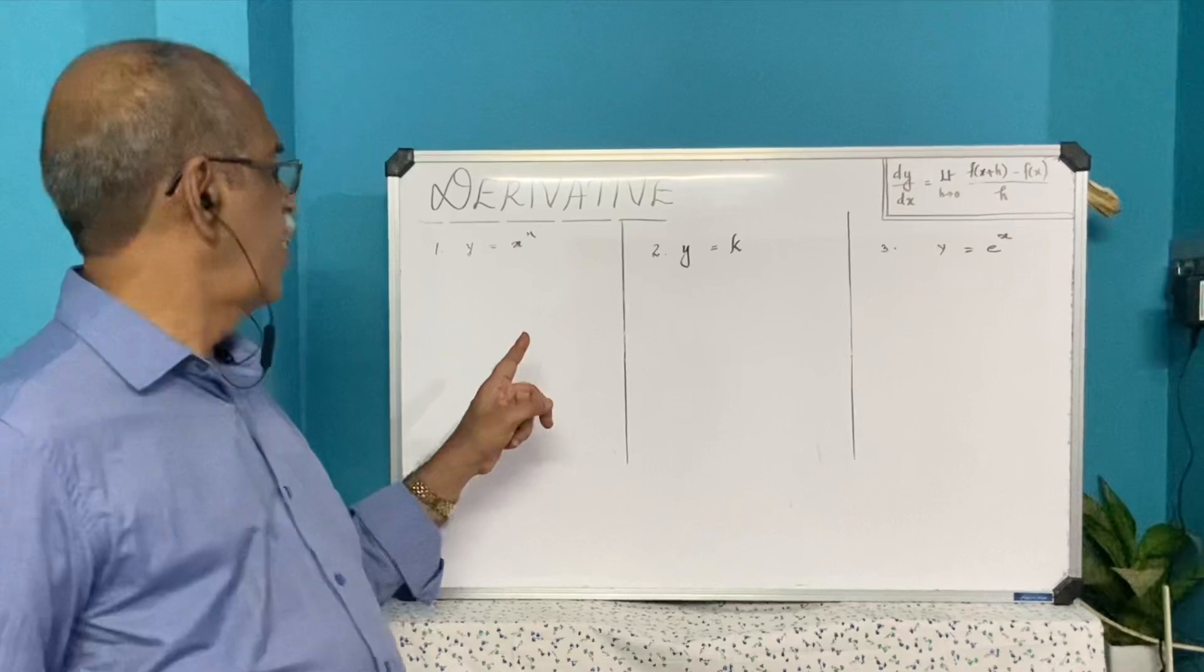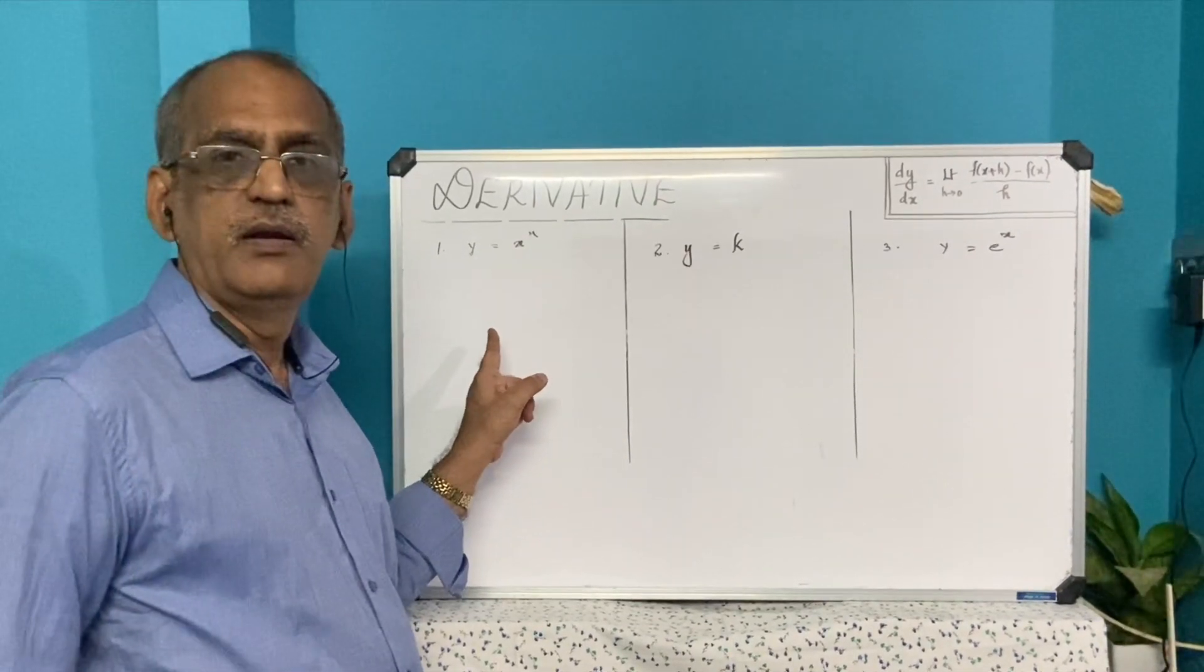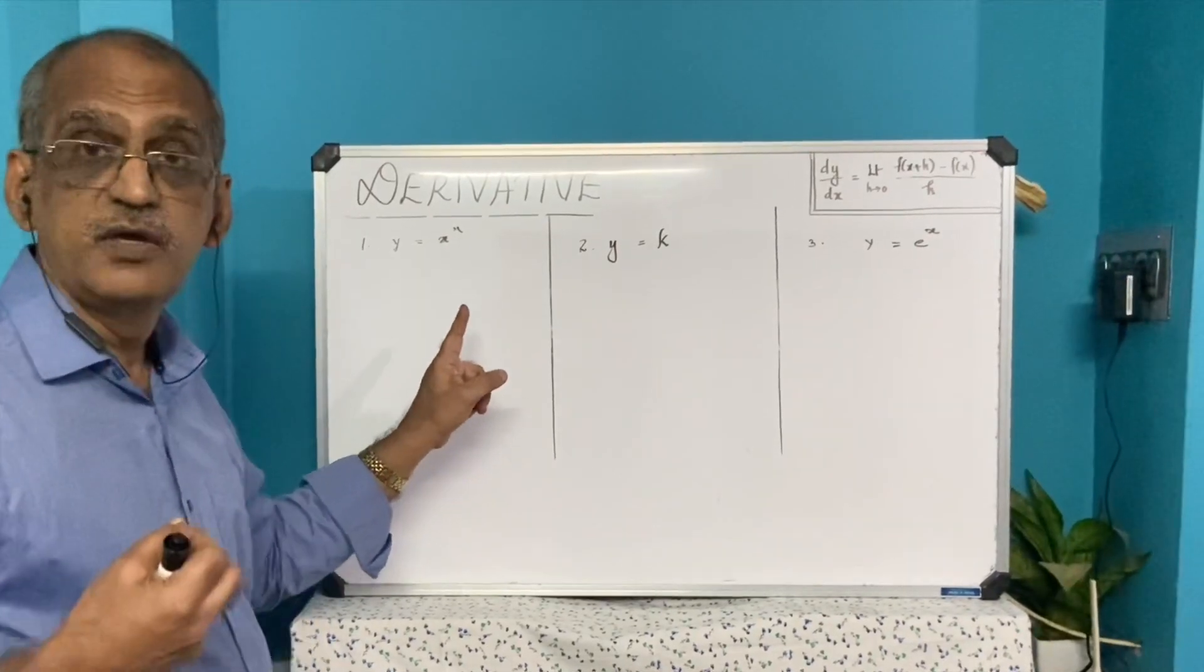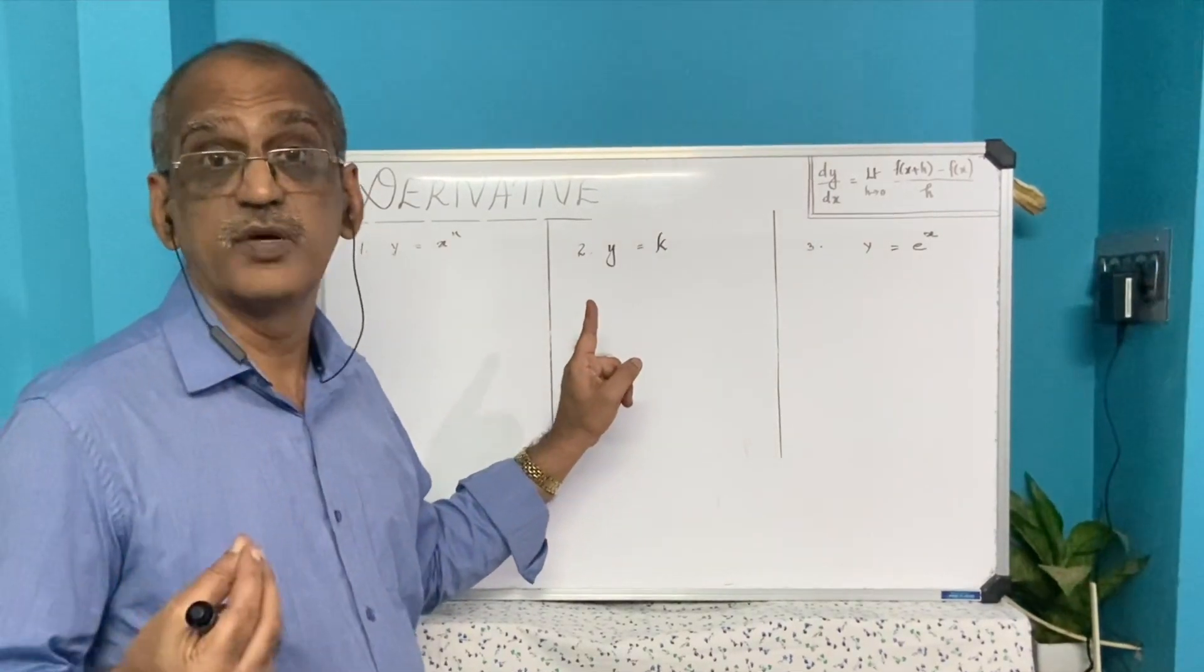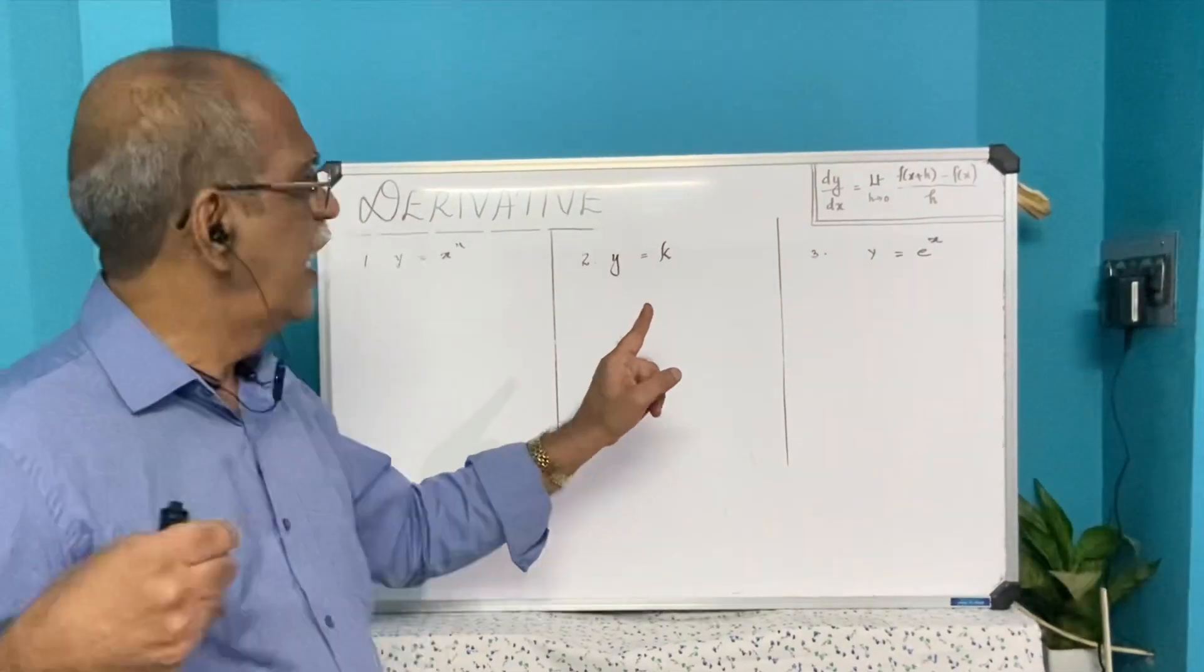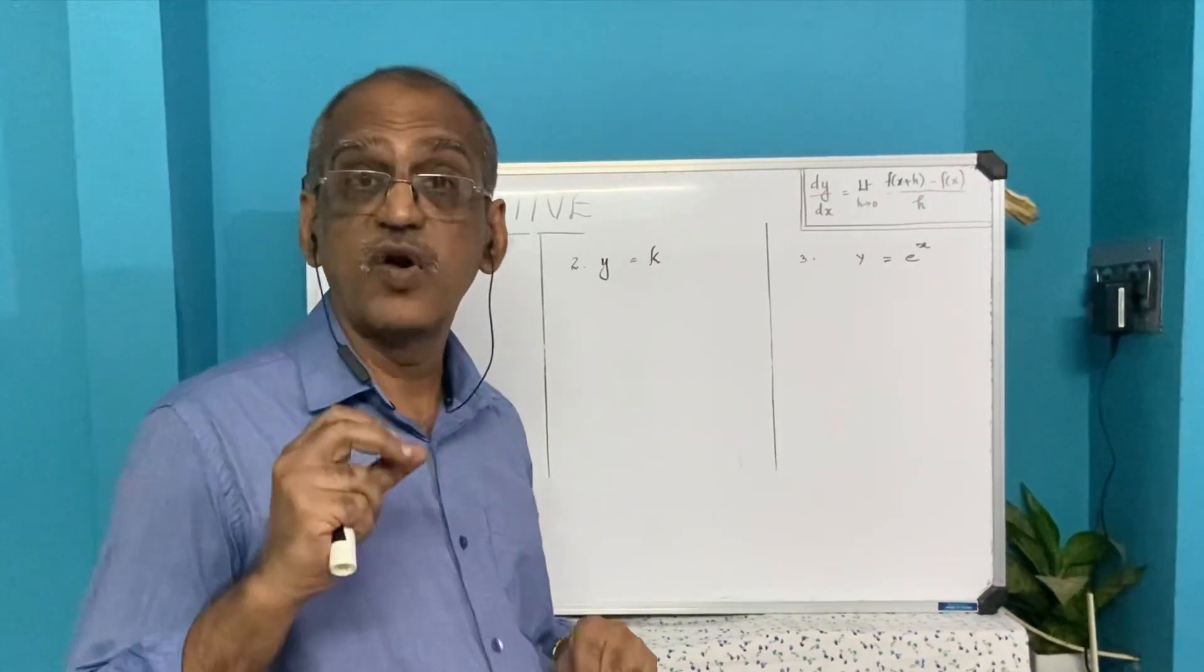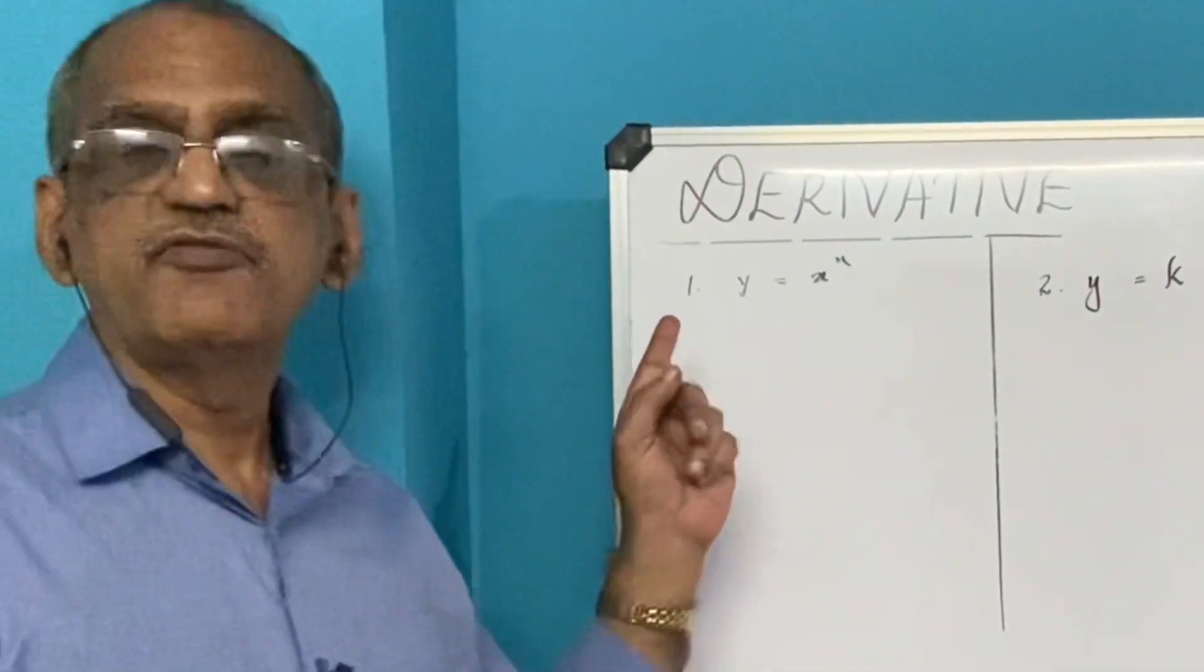The first is y equals x raised to n, also called a power function. The second one is y equals k, a constant function where k is a constant. And the third one is y equals e raised to x, an exponential function.